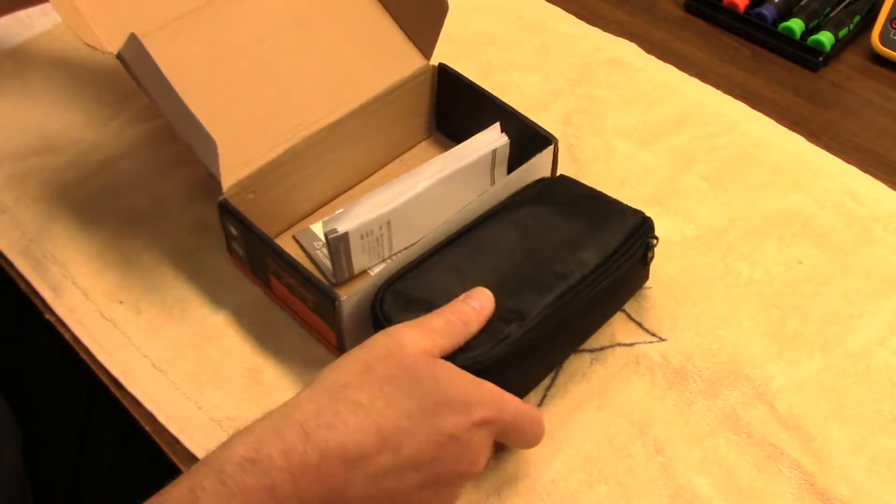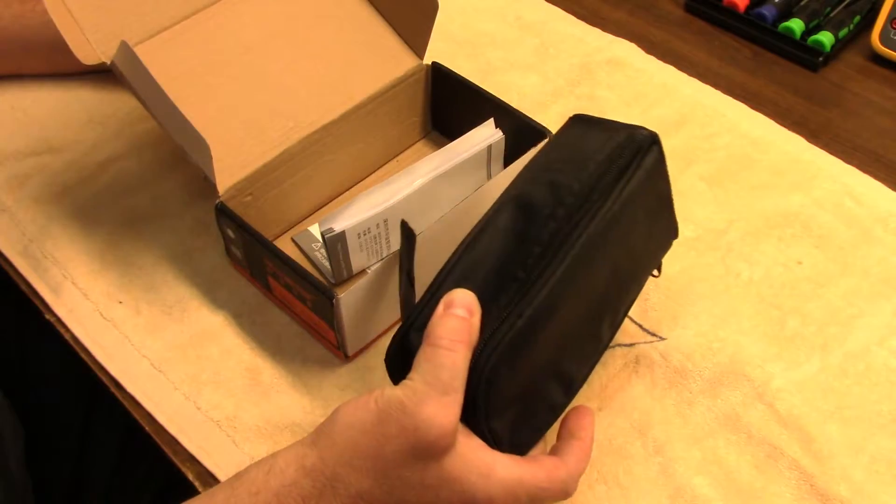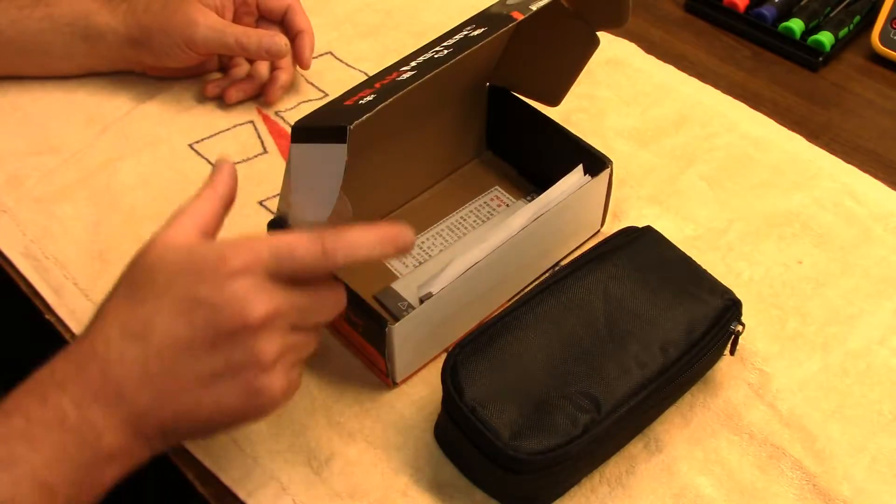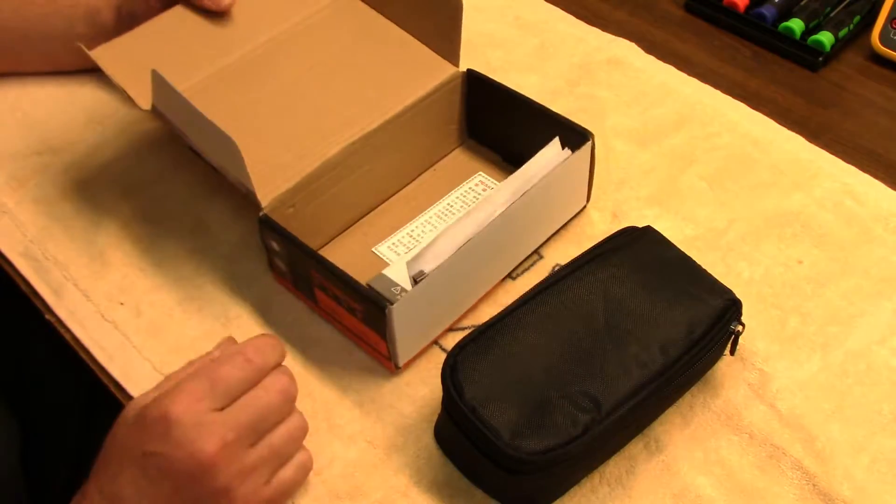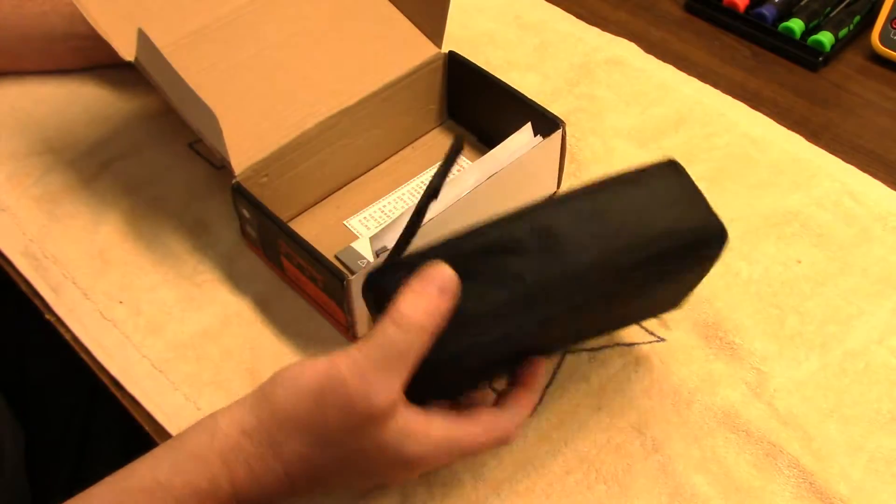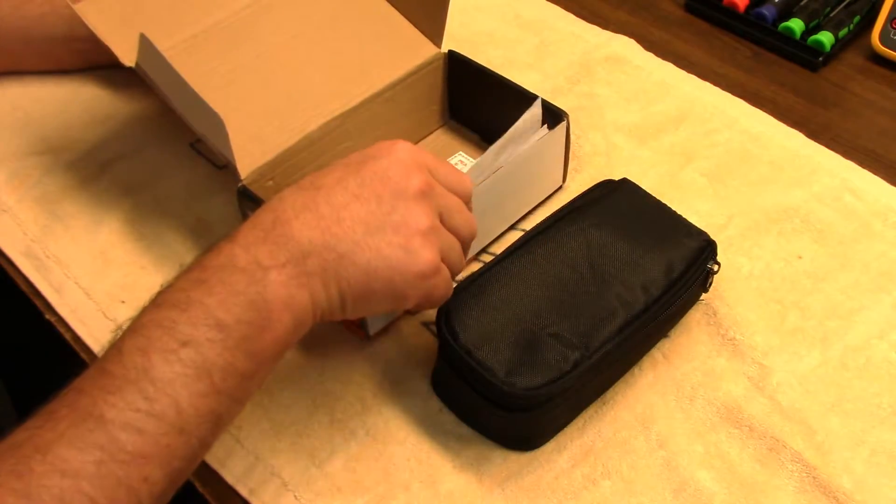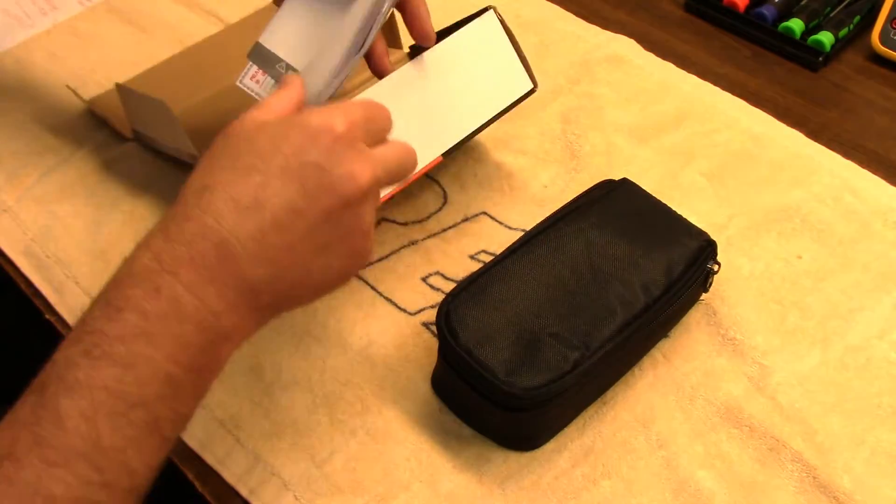It comes in this little vinyl case. Quality isn't spectacular, but what do you expect for 10 bucks? That's what I paid for this, it was on sale. That's kind of the only reason I bought it, but I've been wanting a meter. Generally though, online these are around 20 bucks, but they're definitely worth it I think if you're in the market for a cheap meter.